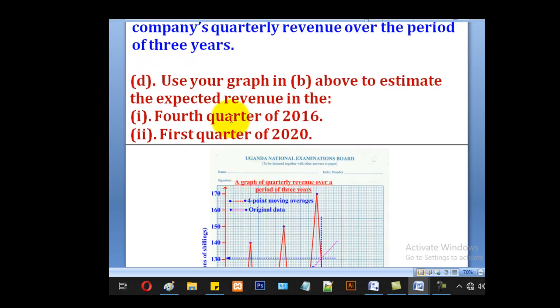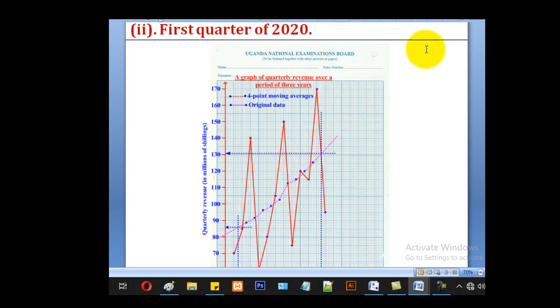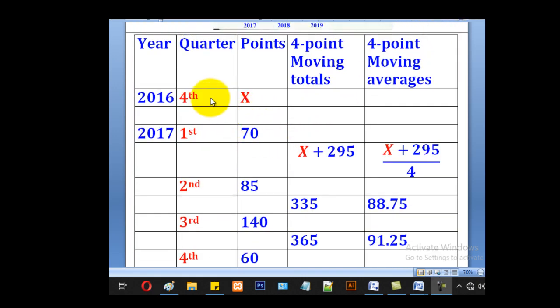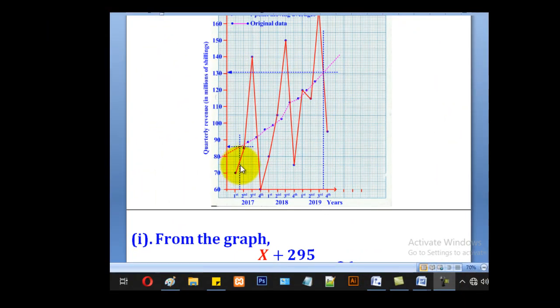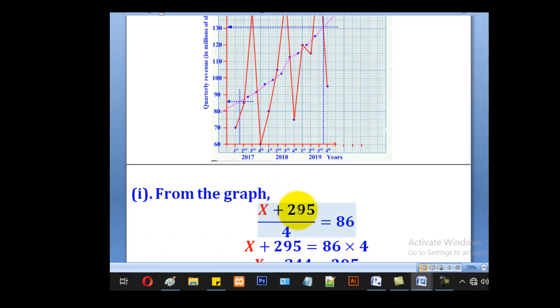Now they want us to use the graph to estimate the fourth quarter of 2016 and the first quarter of 2020. For the fourth quarter of 2016, its moving average is between first and second of 2017. So we are going to draw our line between first and second. We shall draw a line in between the two to meet the trend line. Where it meets, take this side and read off that value. That value will be equated to our value in the table, which is X plus 295 over 4.